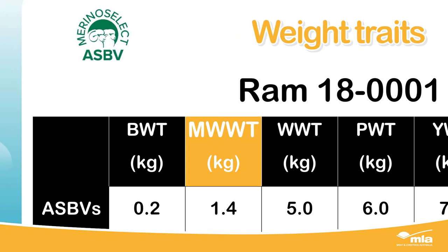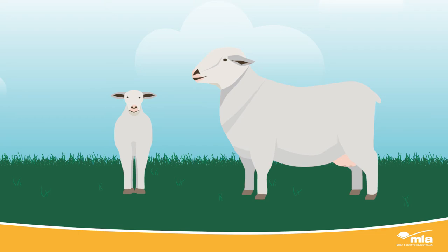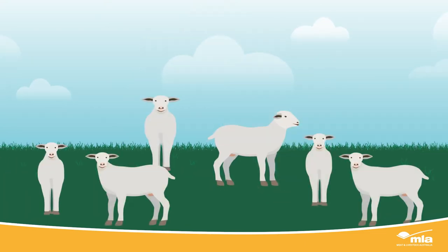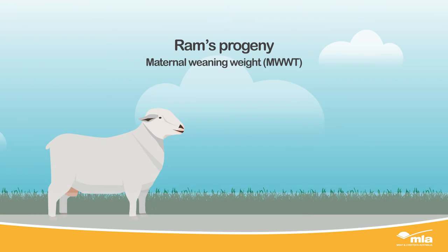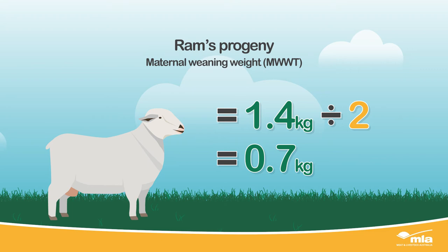MWWT is maternal weaning weight and is also measured in kilograms. This trait describes the amount of extra weight of the lamb contributed by the maternal environment of the mother. A ram with a more positive value will produce daughters that provide a better maternal environment, weaning heavier lambs. So a ram with a maternal weaning weight of 1.4 kilograms will produce daughters who wean lambs heavier by 0.7 kilograms compared to a ram with an ASBV of zero.